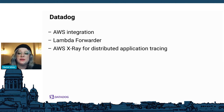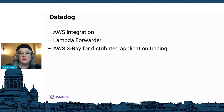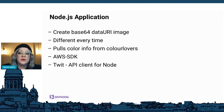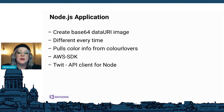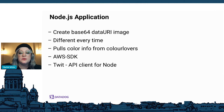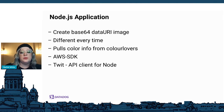On the Datadog side, we'll be using the Datadog AWS integration, the Datadog Lambda forwarder, and integrating AWS X-Ray for distributed tracing. For our actual function, we'll be creating it with Node.js. We'll use Canvas to create generative art based on color palettes from the Color Lovers API. After images are created, we'll save them to an S3 bucket using the AWS SDK. Lastly, we'll use Twit, an API client for Node, to upload media and construct a tweet.